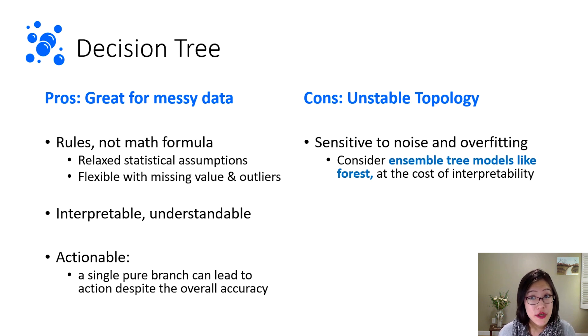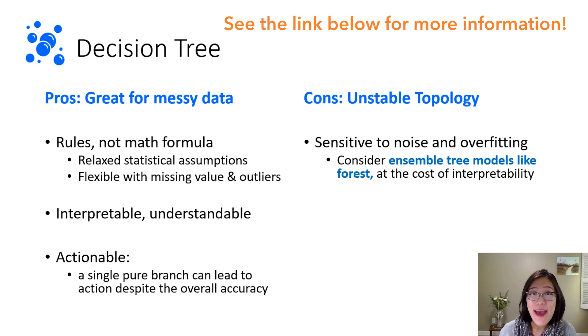The cons of decision tree is that it has unstable topology. When your data have a little noise or change a little, the topology of the tree may change. So that's why many data scientists use decision trees as a part of an ensemble model, like gradient boosting or forest. I link an excellent tutorial below explaining how to assemble trees in SAS software.